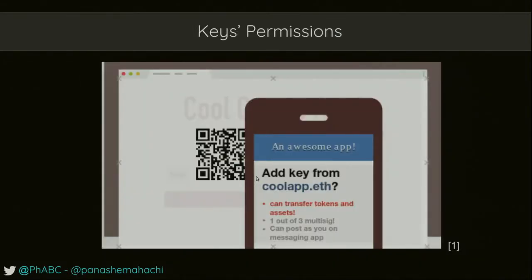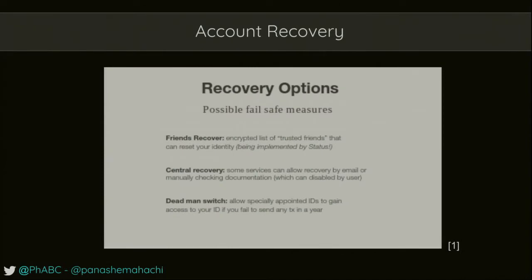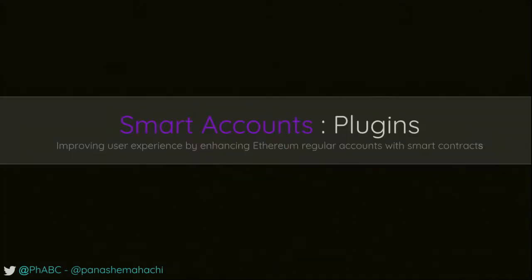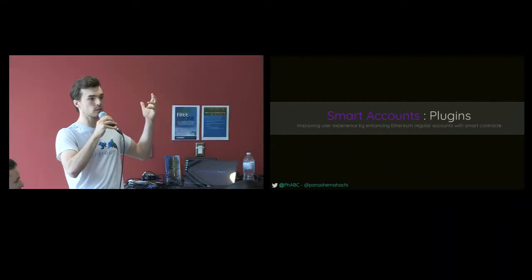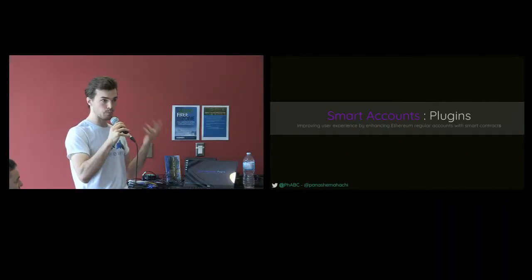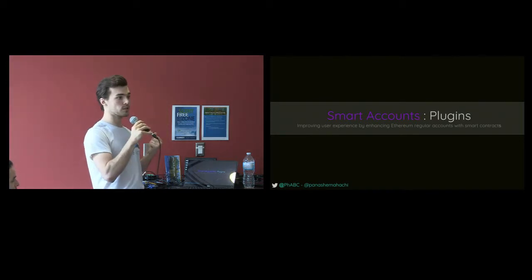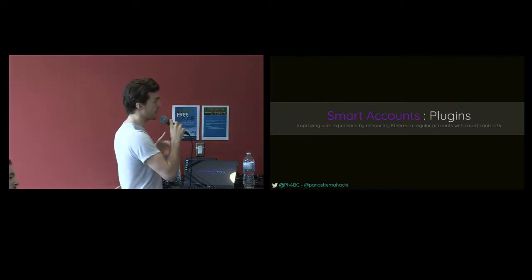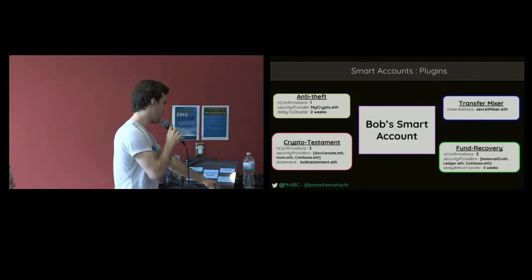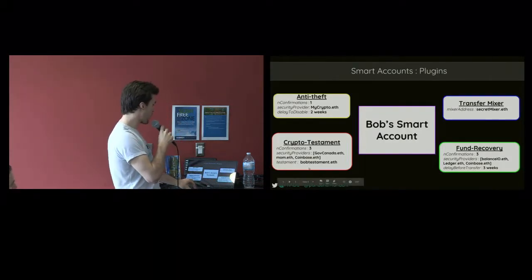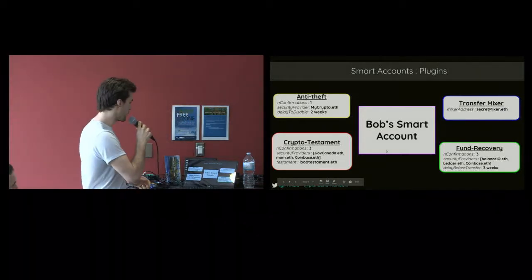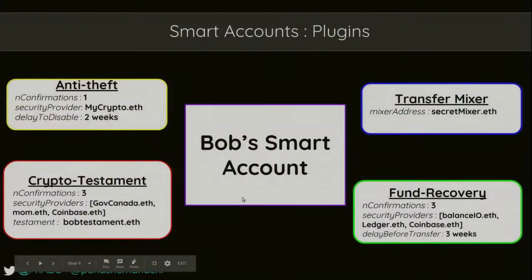What I'm going to basically propose is you can abstract it a little bit, and smart accounts can basically just be thought of like regular accounts that people are used to, where you can add plugins that enhance the regular account experience. So for example, you have Bob's smart account in the middle, and you could have functionalities where you have all these different keys that have different clearance levels in the smart account.